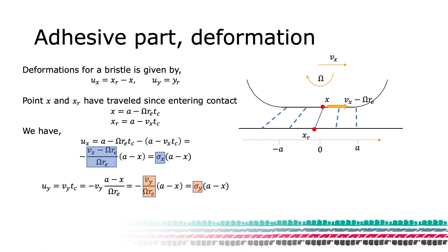We can now use these two expressions to formulate a new expression for the deformation that depends on the position of the bristle's top position. For convenience, we introduce the concept of slip or theoretical slip, sigma X and sigma Y, as the relative speed difference between the upper and the lower bristles.